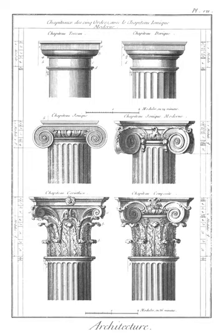Pier: an upright support for a superstructure, such as an arch or bridge. Pilaster: a slightly projecting column built into or applied to the face of a wall.